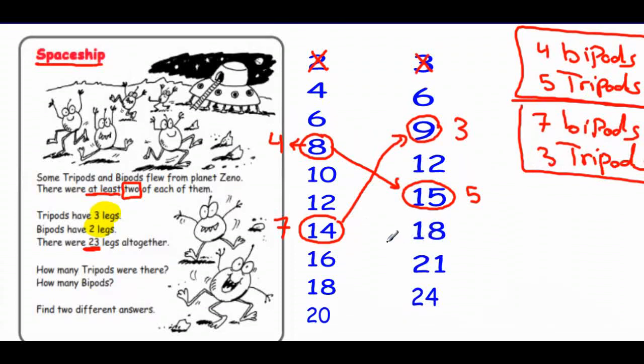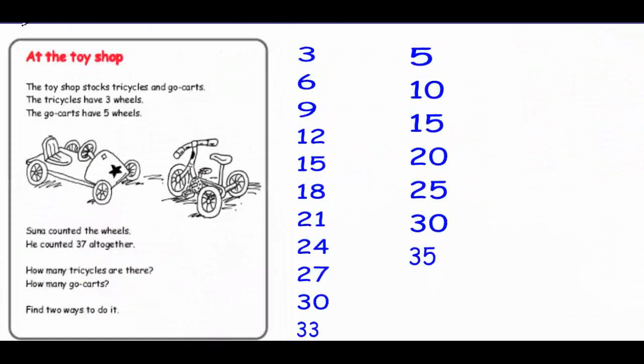Okay I will give you a homework. You can check are there any other solutions for this story or no. There is a toy shop. The toy shop stocks tricycles and go-karts. The tricycles have three wheels. The go-karts have five wheels.